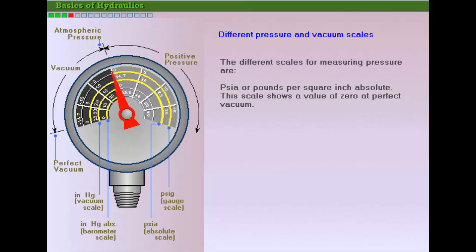This figure illustrates the different units for pressure and vacuum measurement. The common scales for pressure measurement are PSIA, that is, pounds per square inch absolute. This is a scale which starts from a perfect vacuum and shows a reading of zero at this stage.